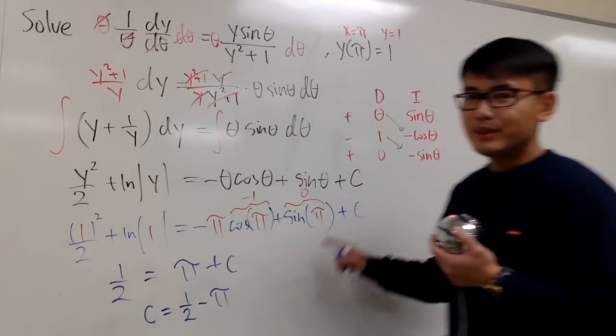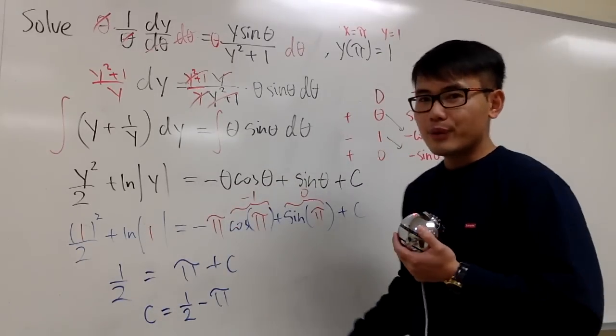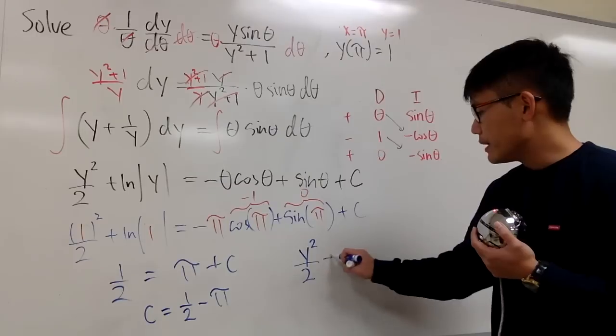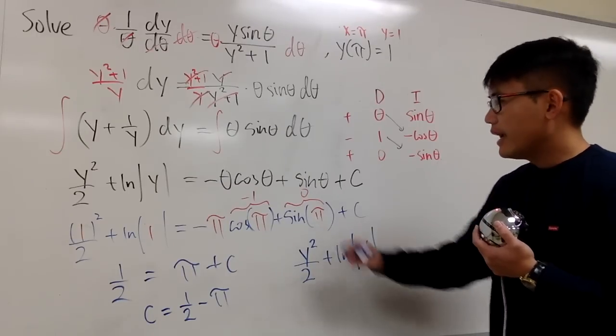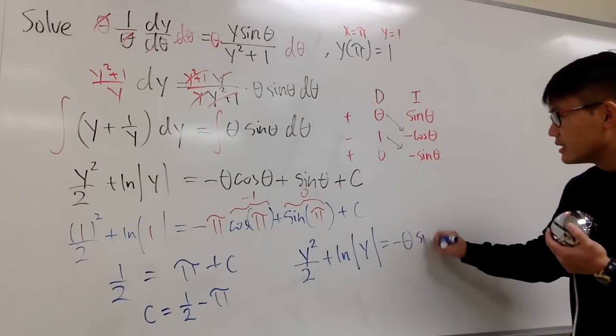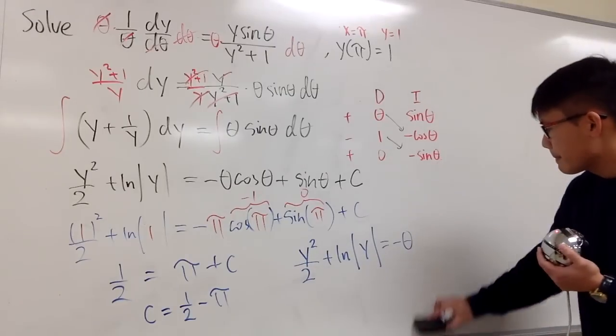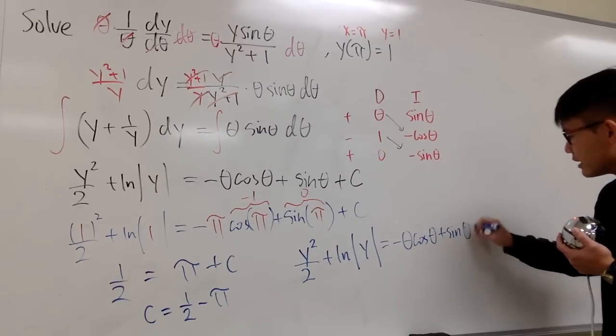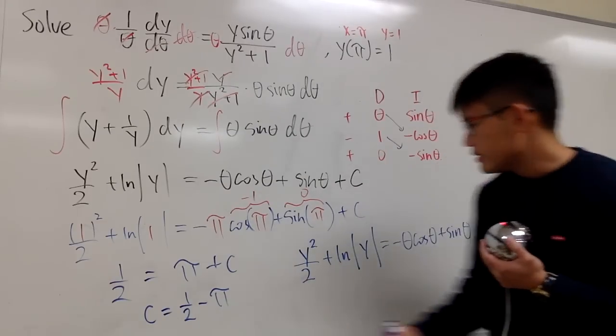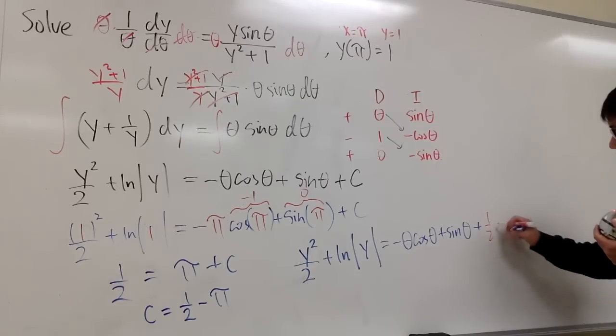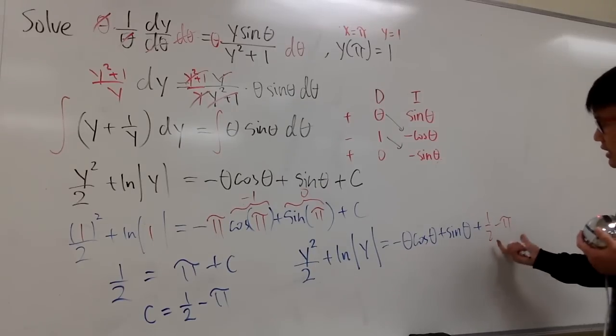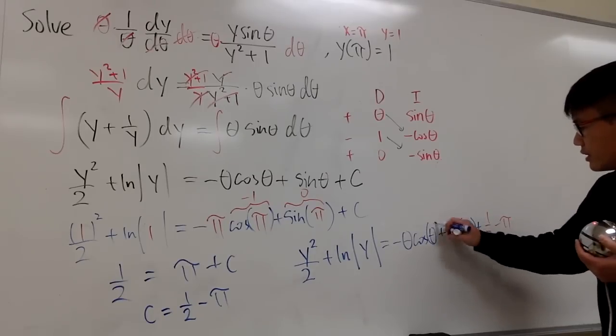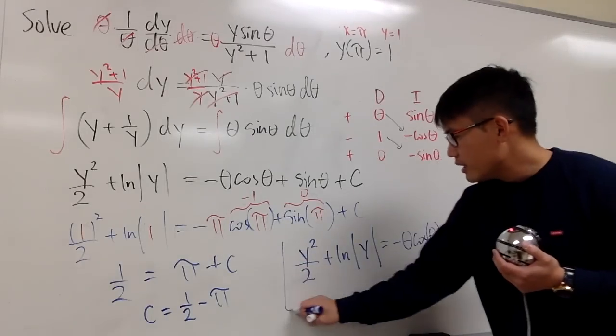All we have to do is just plug this into the C. So let me write this down for you guys, right here. Here, we have y squared over 2 plus ln absolute value of y, and then this is equal to negative theta cosine theta. And then we add the sine theta after that. And at the end, the C is all that. So we add 1 half minus pi. And once again, the C is not inside of the sine. This right here is it.